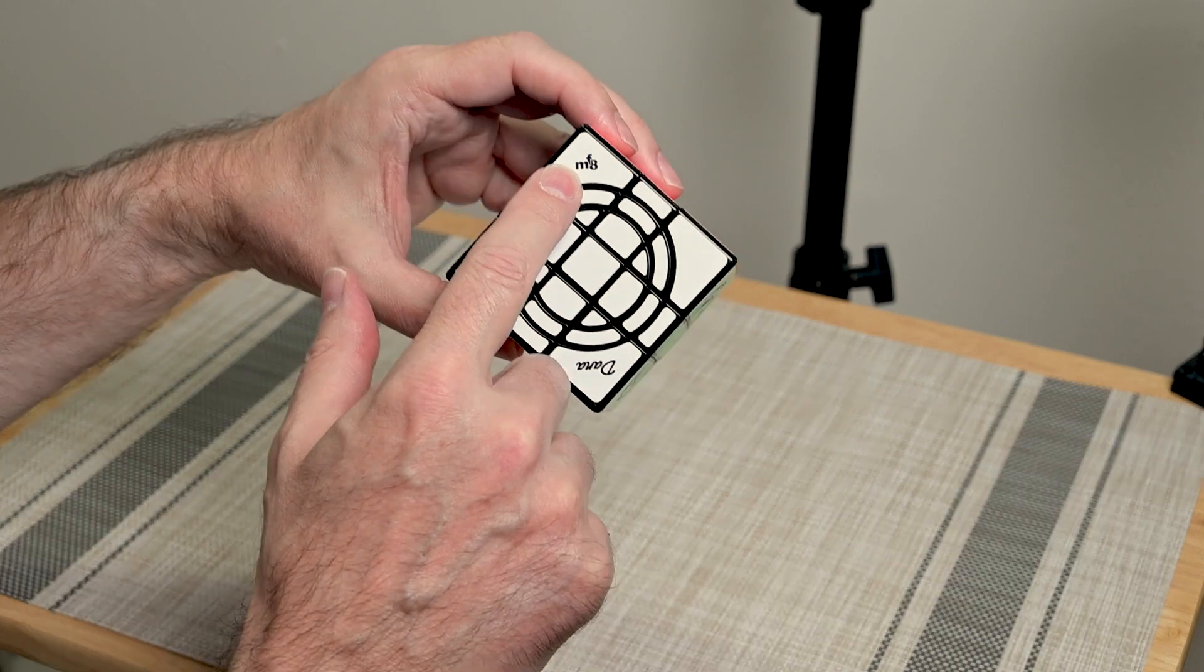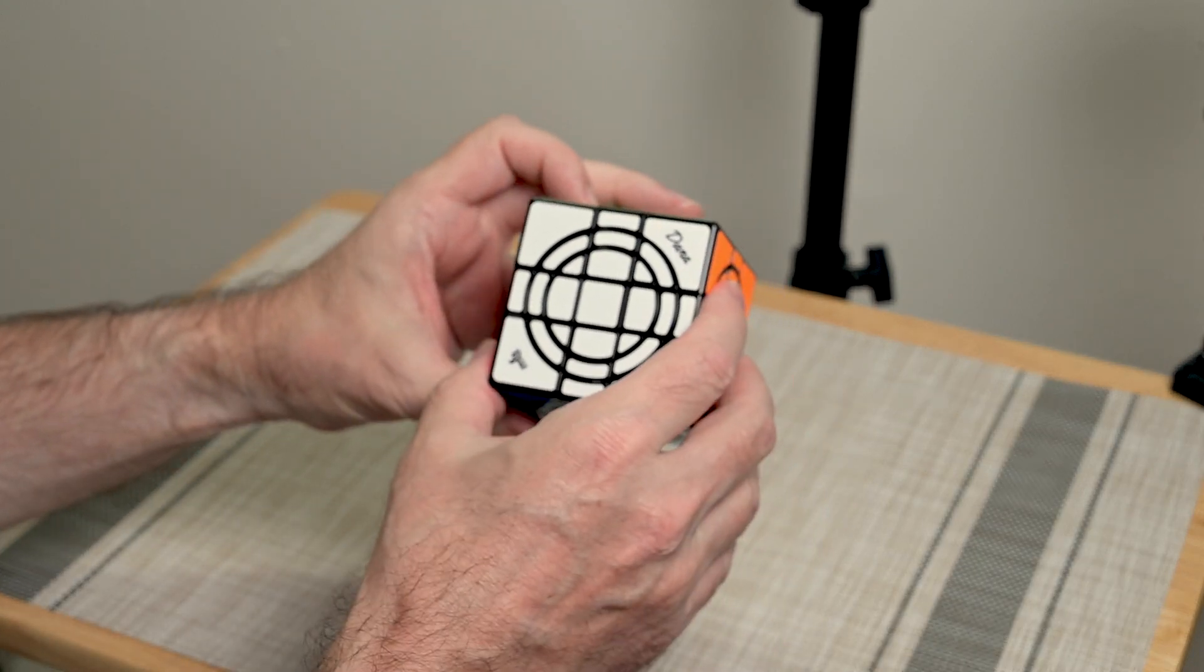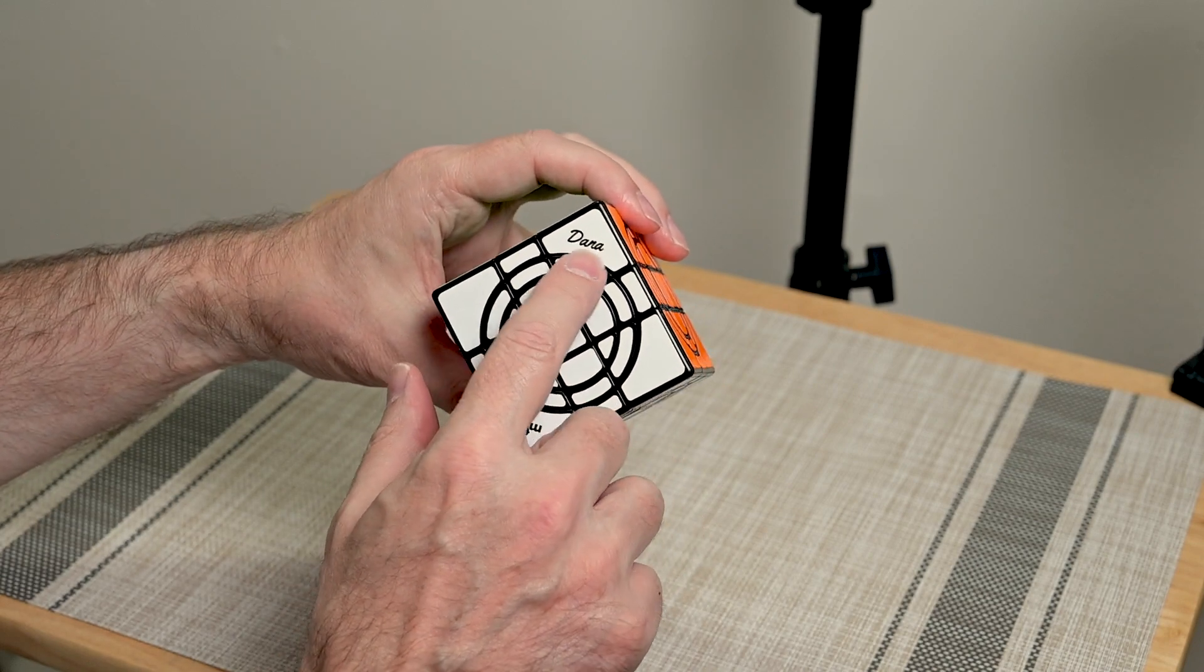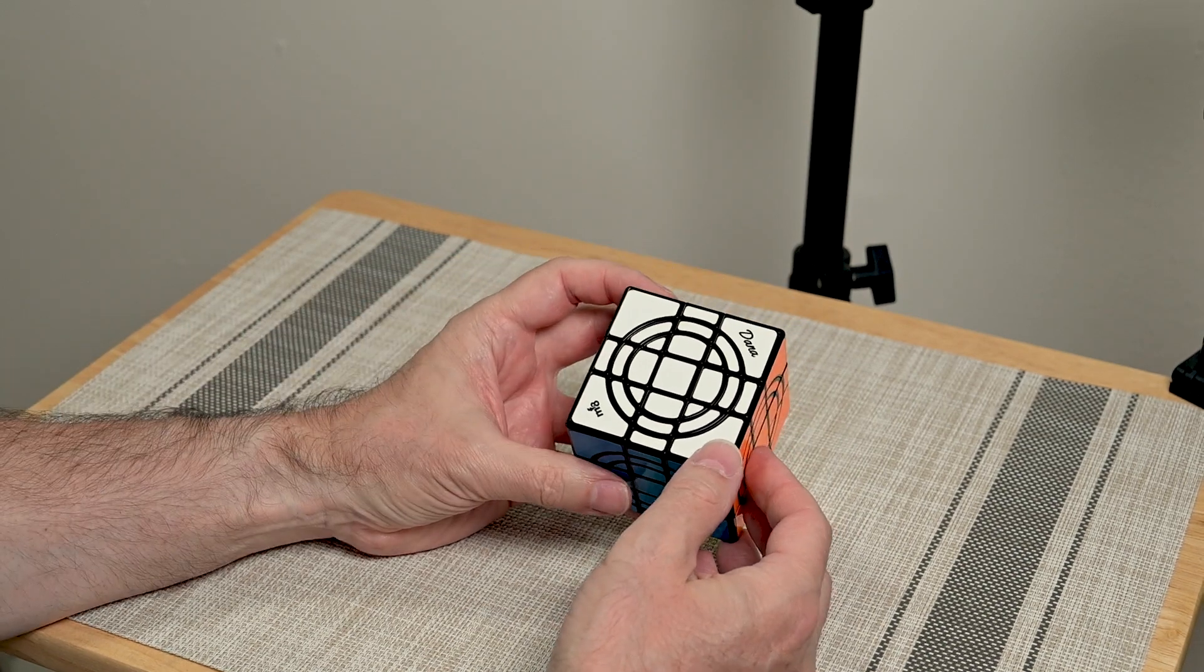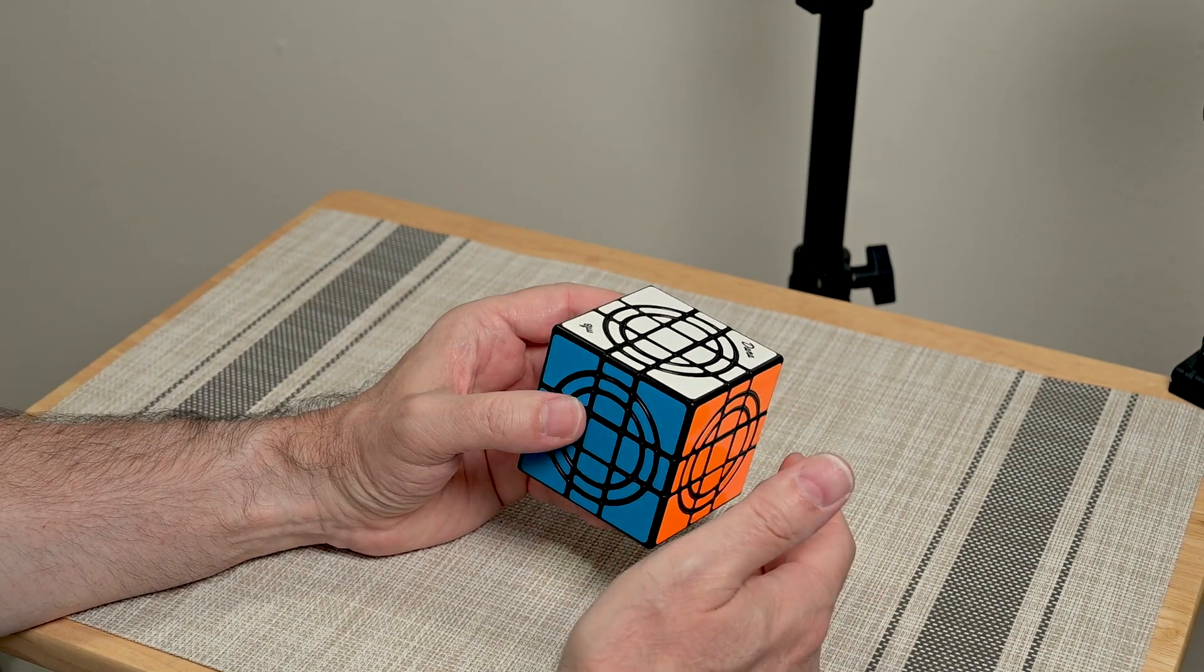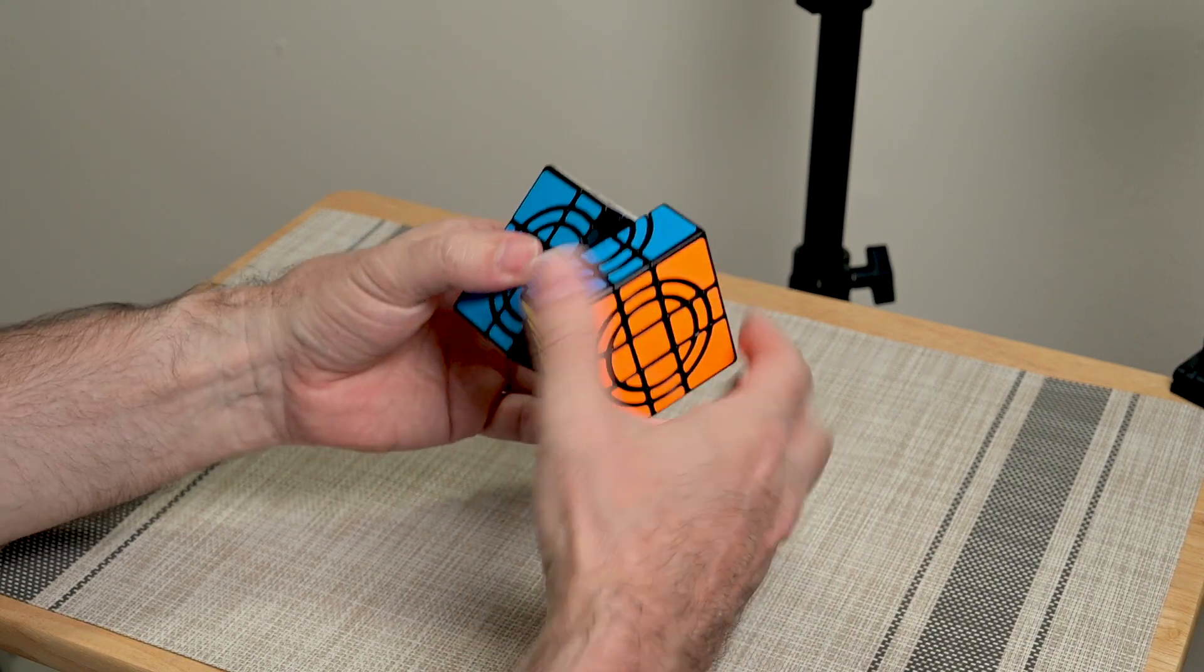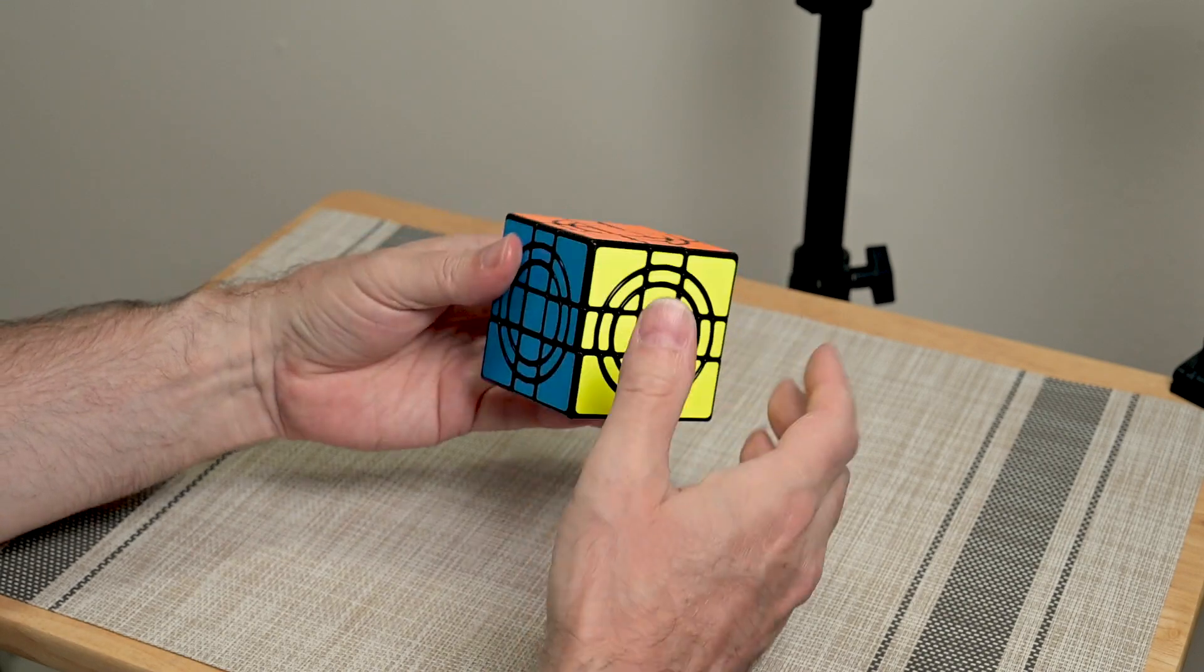So, we see the MF8 logo. This is very nice and crisp on there. And then, we have Dana on there. So, I actually don't know. I guess that must be the inventor of the double crazy cube. I wish I knew a little bit more about that and how that logo came out to be on there.